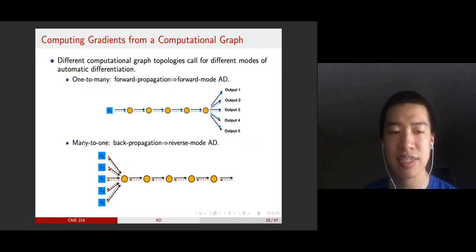This is similar for many-to-one mappings. In this case, the back propagation is more efficient. This kind of graph is more adaptable to reverse mode of automatic differentiation. That's the reason why we need two different kinds of modes of automatic differentiation.